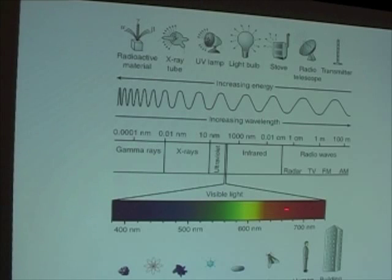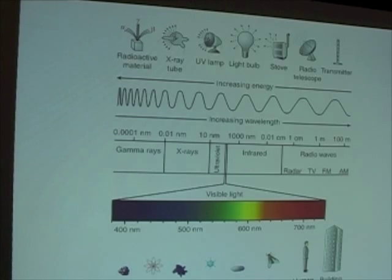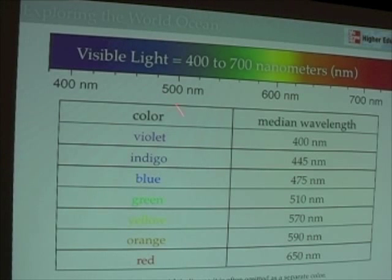We're going to come back to visible light. It's called visible light because it's the portion of the electromagnetic spectrum that stimulates our eye. Visible light is composed of different colors, ranging from 400 nanometers to 700 nanometers — the colors we've learned in junior high or high school, the colors we're familiar with.